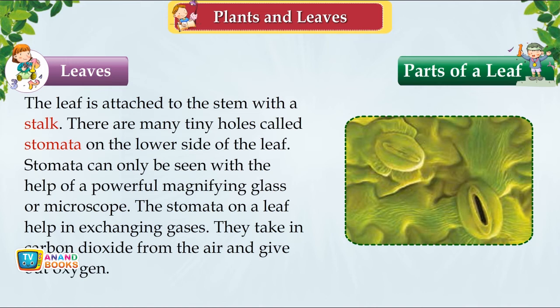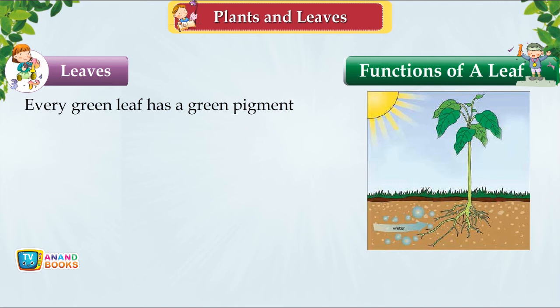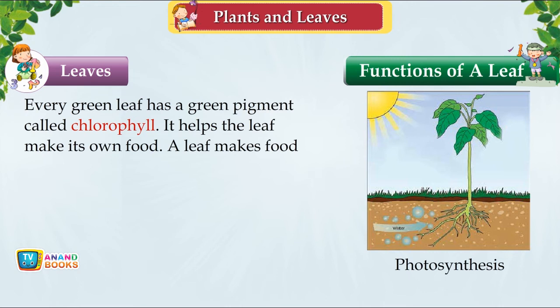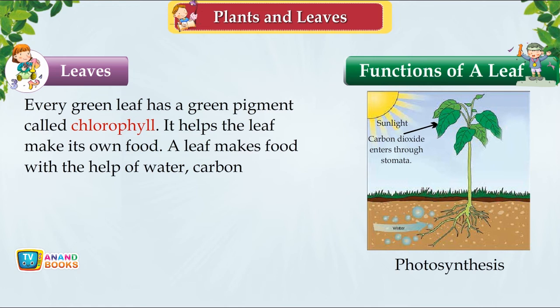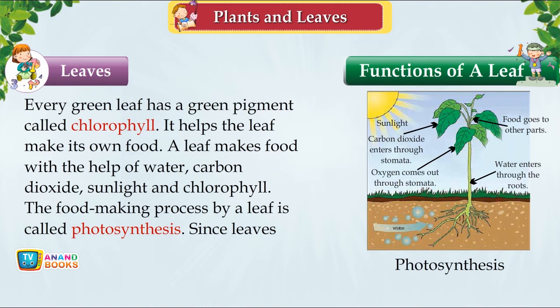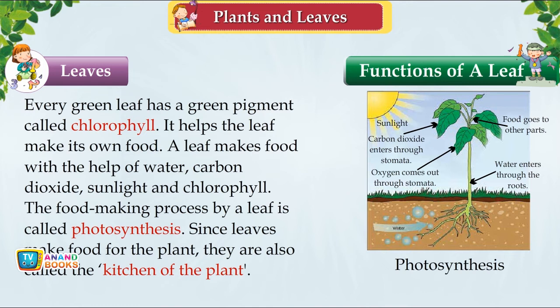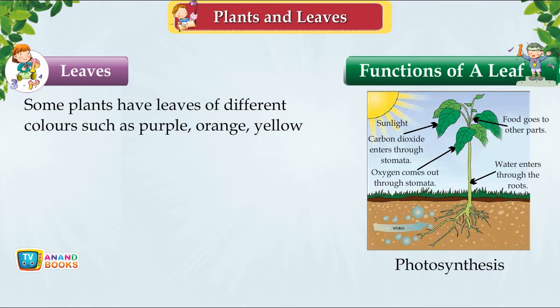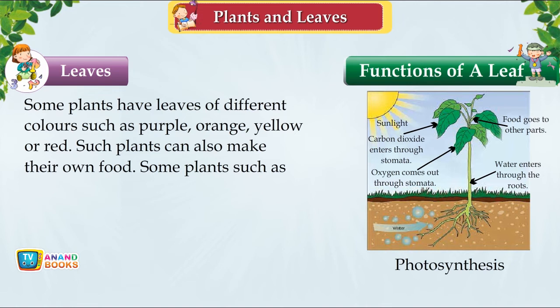Functions of a Leaf. Every green leaf contains chlorophyll, a green pigment that helps the leaf make its own food using water, carbon dioxide, sunlight and chlorophyll. This food-making process is called photosynthesis. Since leaves make food for the plant, they are called the kitchen of the plant. Some plants have leaves of other colours like purple, orange or yellow but can still make food. Plants like mushrooms, yeast and molds do not have chlorophyll, so they cannot make their own food.